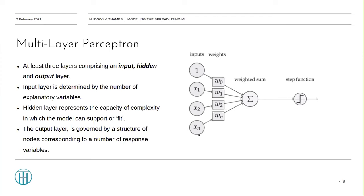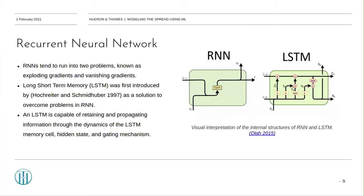Recurrent neural networks are a type of networks which leverage the backpropagation through time algorithm to determine gradients. Through this process, RNNs tend to run into two major problems, known as exploding gradients and vanishing gradients. The long short-term memory cell was first introduced by Hochreiter and Schmidhuber as a solution to overcome these problems. Basically, an LSTM is capable of retaining and propagating information through the dynamics of the LSTM memory cell, hidden state, and gating mechanism.